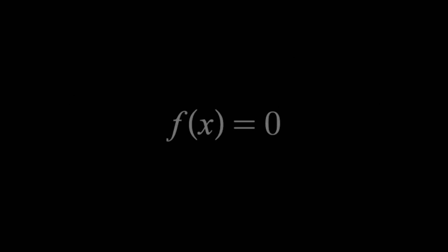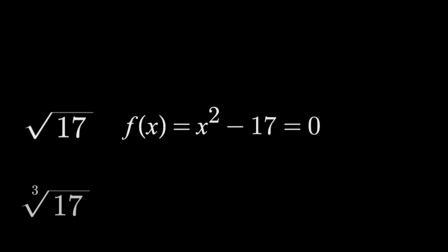But what we're really doing here is even more powerful. We're finding the zeros of equations. Like the square root of 17 is really just the solution to when this function equals zero. Solve that and you get plus or minus root 17. The cube root of 17 comes from solving this equation. And given any smooth function,